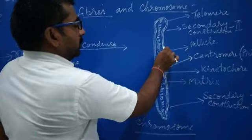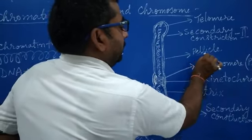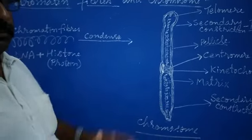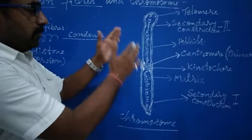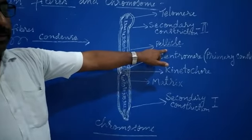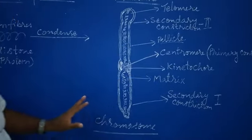The outer boundary of the chromosome is called pellicle. Pellicle covers the chromosome externally. The chromosome is covered externally by a membrane, and that membrane is known as pellicle.